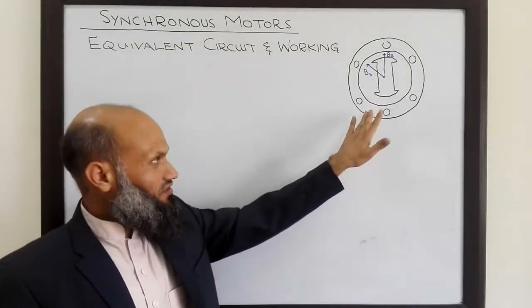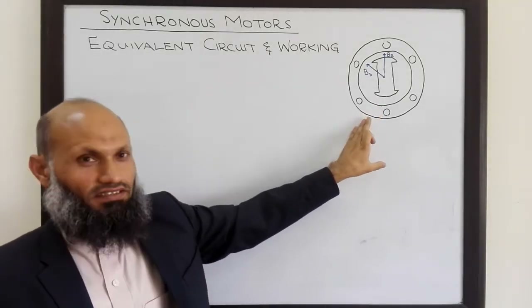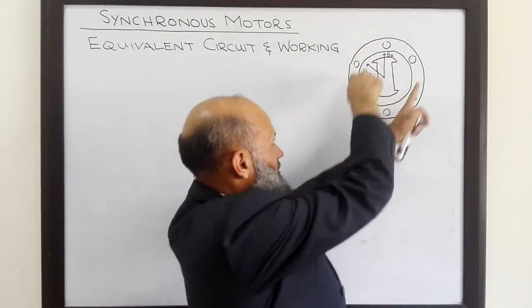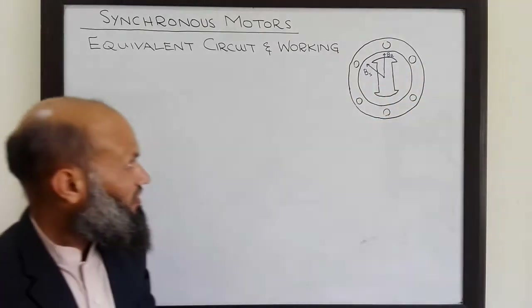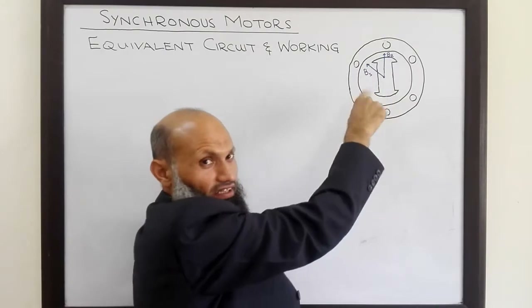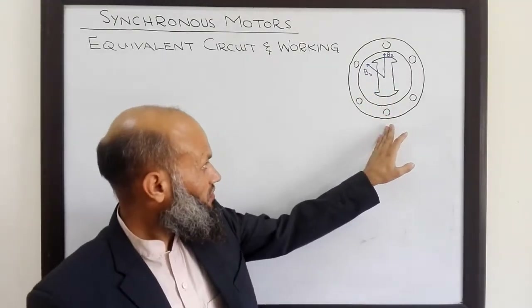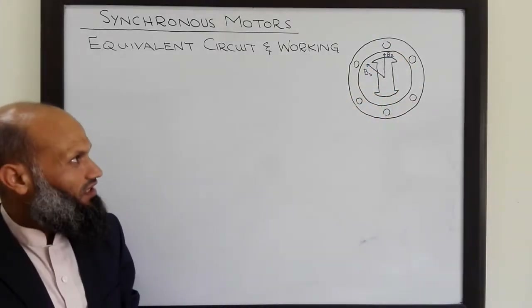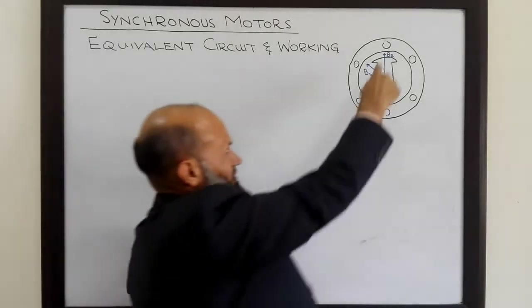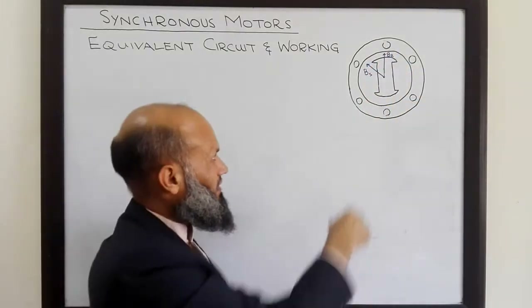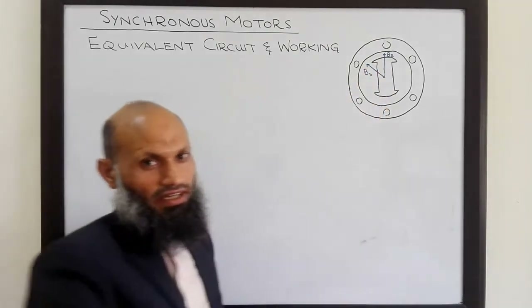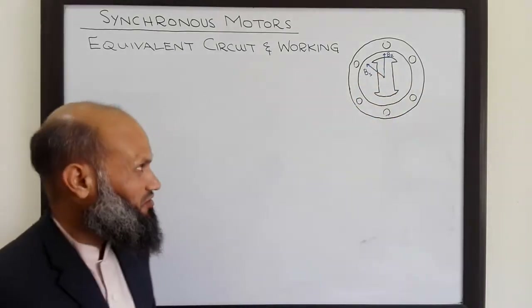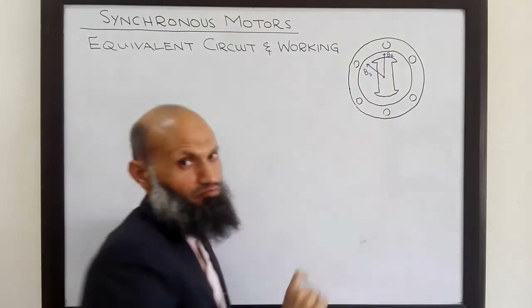Physically, this synchronous motor is the same as a synchronous generator. On the stator, we have a set of three-phase coils placed 120 degrees apart from each other, and the rotor is generally an electromagnet. In synchronous motors, we connect three-phase voltage sources to this set of three-phase coils, and that causes currents to flow in these coils, producing a stator magnetic field effect. We have already shown that this stator magnetic field rotates with synchronous speed and is of uniform magnitude.